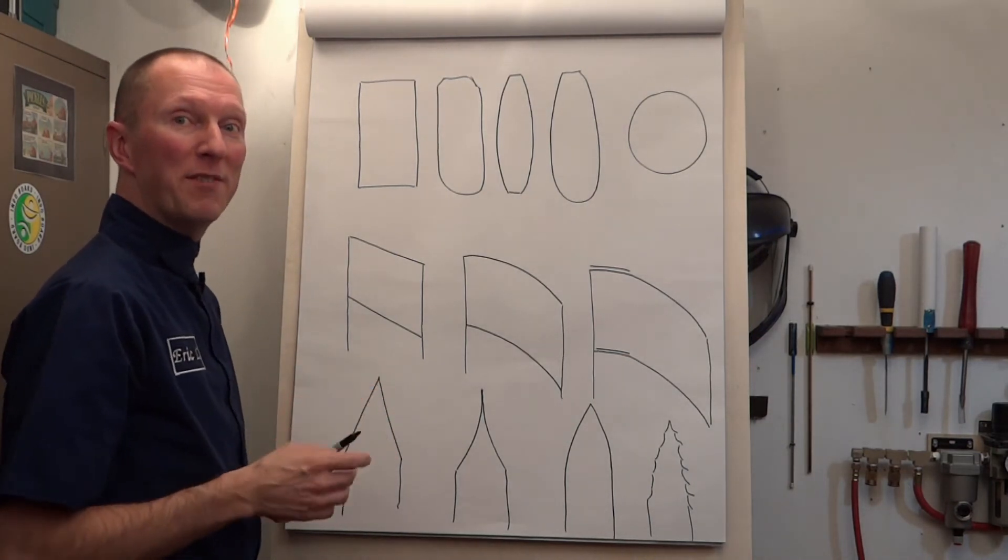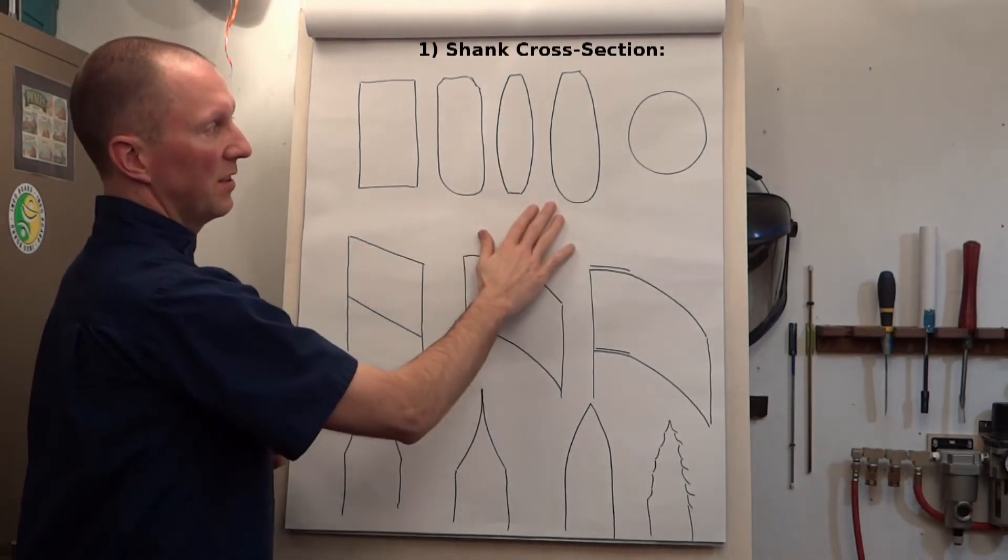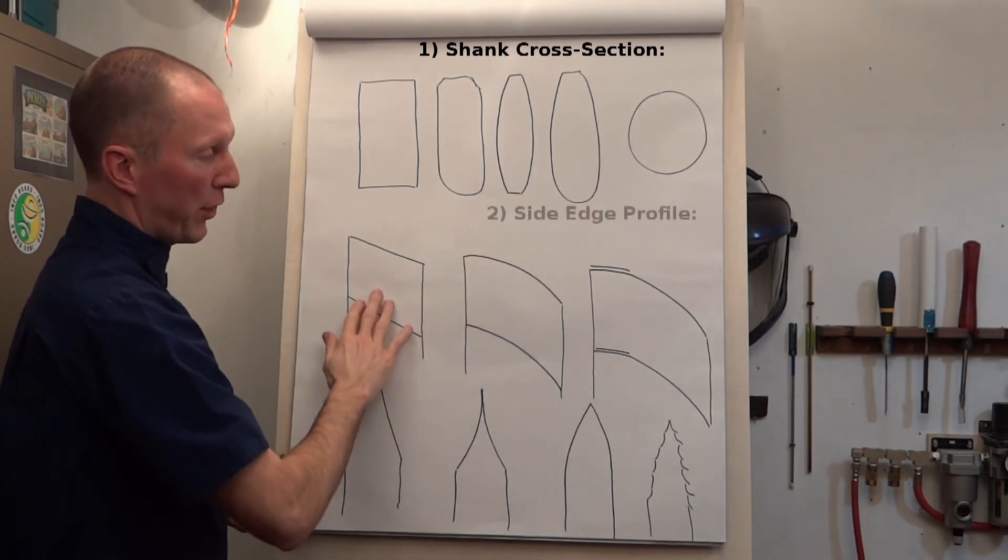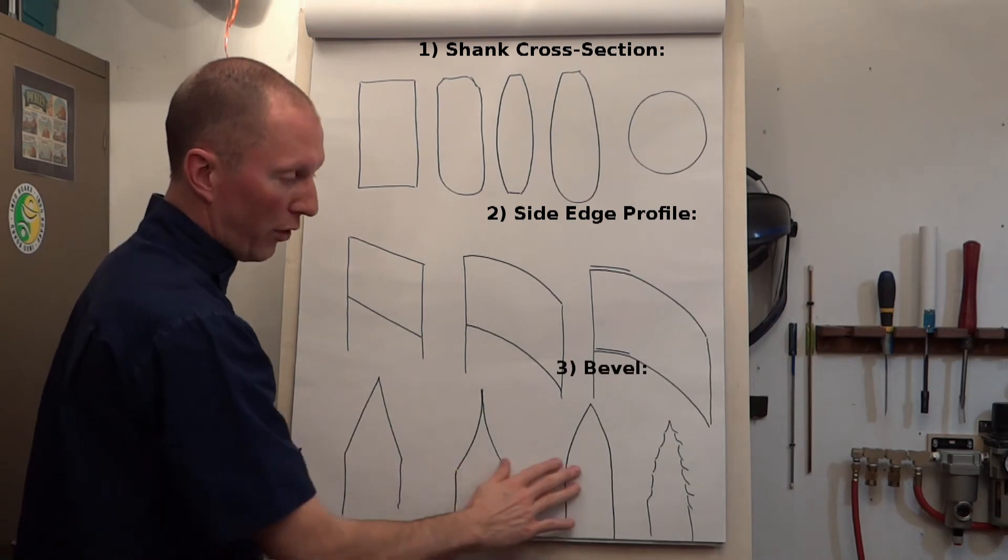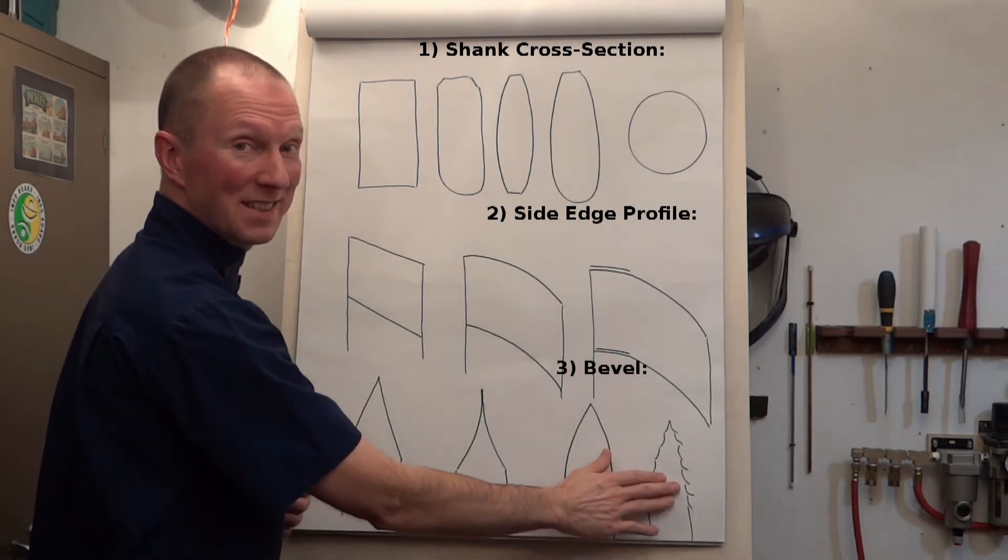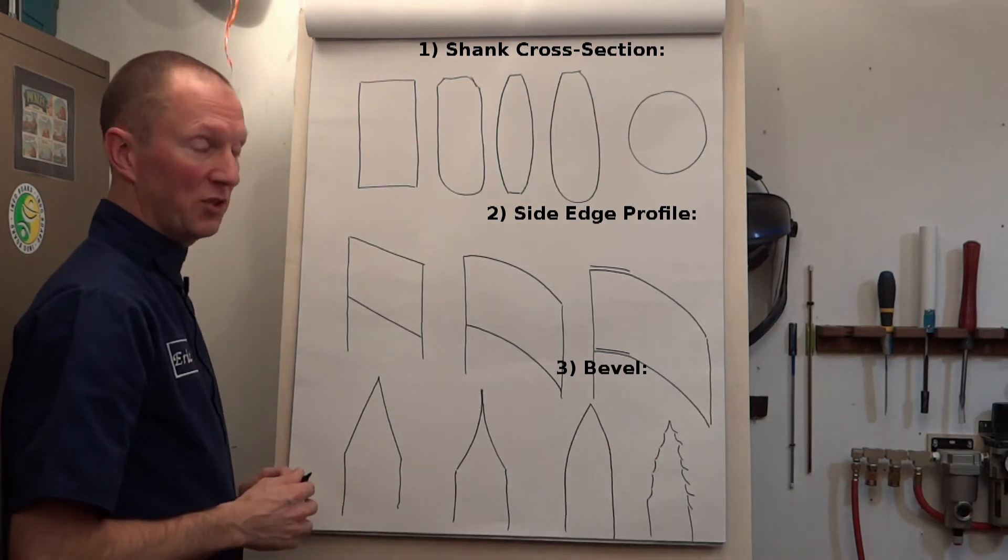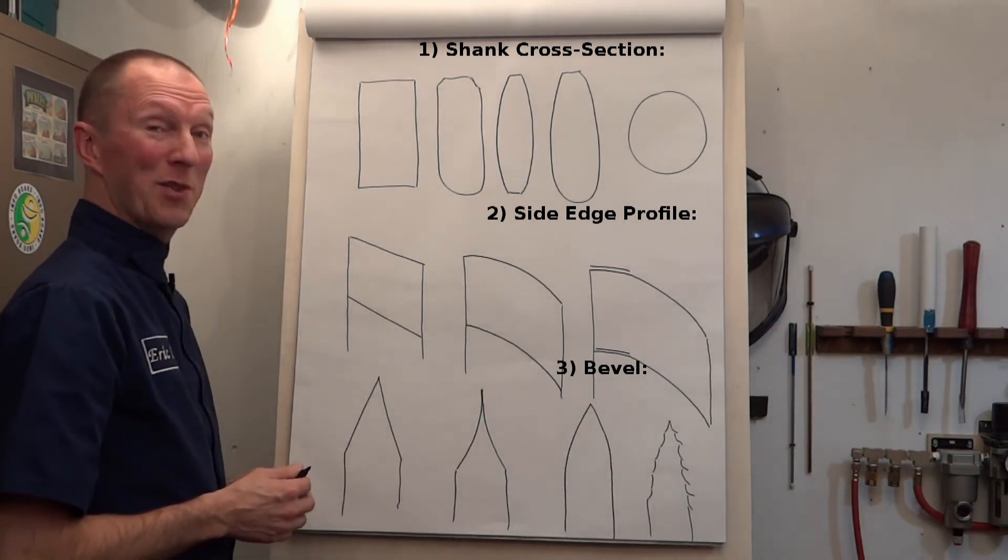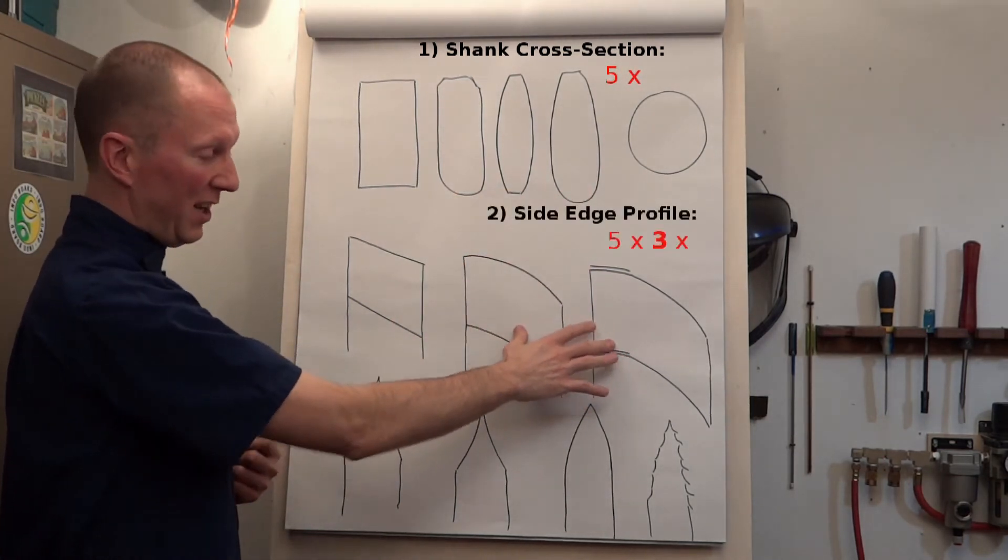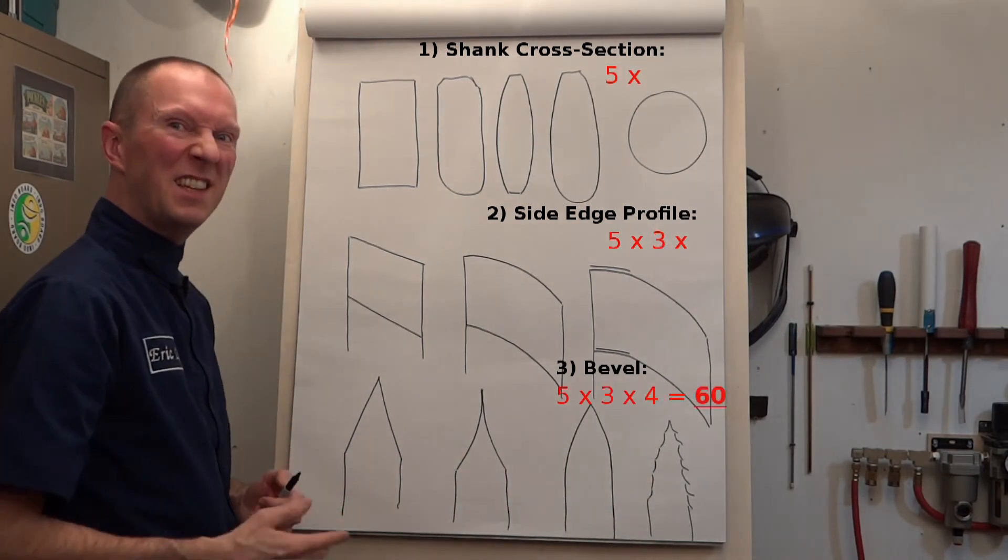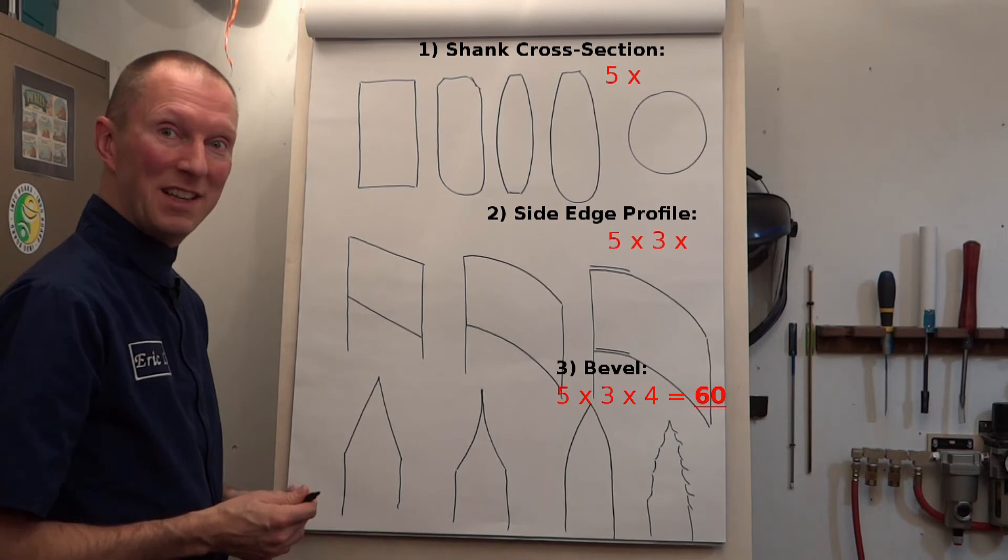Taking a look at these three variables, you have five versions of a shank cross-section, three basic versions of an edge profile, and four versions—remember this can be intentional or unintentional—but four versions of a bevel composition combined. If you do the math, well let's see: five versions times three is fifteen, times four you've got sixty different variations of a skew—sixty completely different characters.